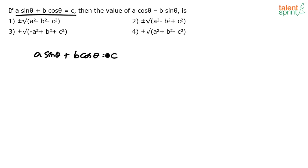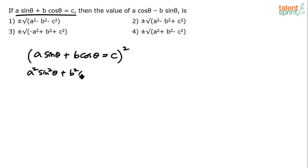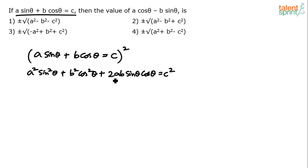Many of you have skipped this without realizing you already know how to solve it smartly. Let's follow the regular method first — square both sides. So (a·sinθ + b·cosθ)² = c², giving a²·sin²θ + b²·cos²θ + 2ab·sinθ·cosθ = c².